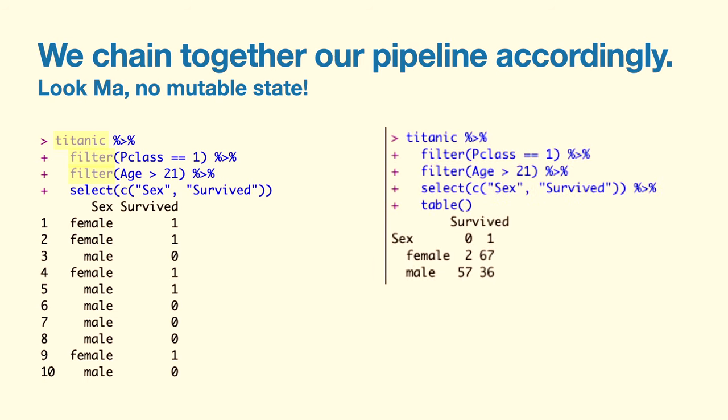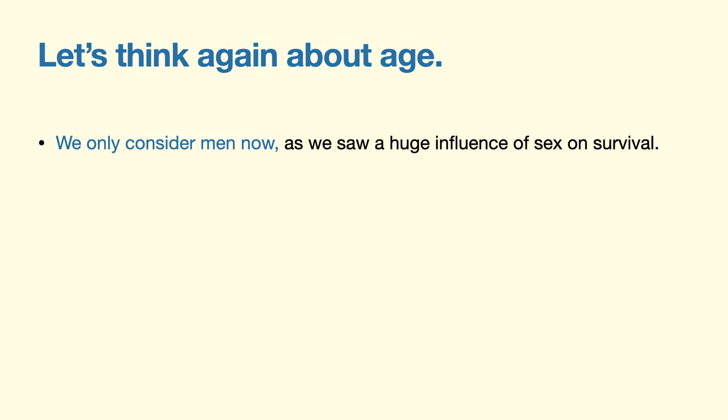We summarize this using the table command and get a cross-table of the two columns. Out of these 69 women, all except two were able to survive. For men, it looked quite the opposite — most of them died. Apparently there seems to be, as expected, an influence of sex on survival. Now let's talk about the age problem we had ignored earlier. Our working hypothesis was that age may influence survival — very old people may be more frail, and very young children would have had larger chances due to 'women and children first.' Since sex crucially influences survival, it makes sense to split the analysis into men and women. Let's start with men.